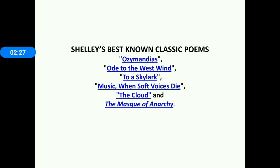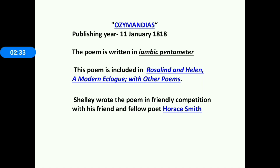Ozymandias was published on 11th July 1818. The poem is written in iambic pentameter and is included in Rosalind and Helen: A Modern Eclogue with Other Poems, a collection of poems. Shelley wrote the poem in friendly competition with his friend and fellow poet Horace Smith.